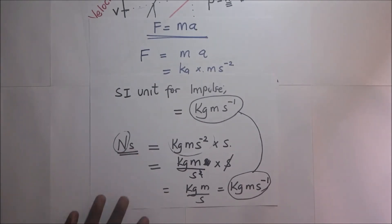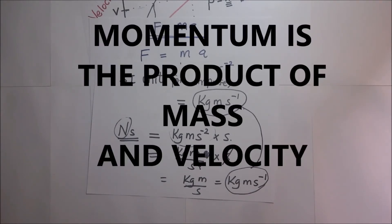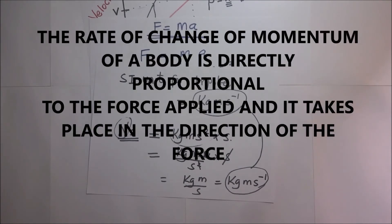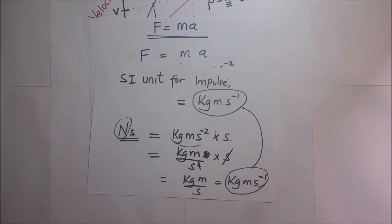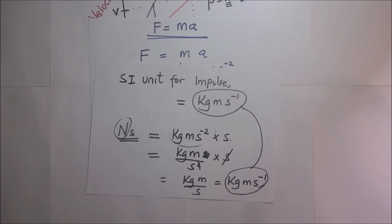To recap: in this video we have covered Newton's second law of motion. We started with momentum — the product of mass and velocity — then discussed Newton's second law, which states that the rate of change of momentum of a body is directly proportional to the force applied and takes place in the direction of the force. We also talked about impulse, which quantifies the overall effect of a force acting over time.